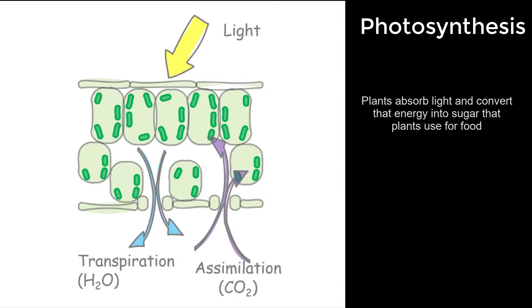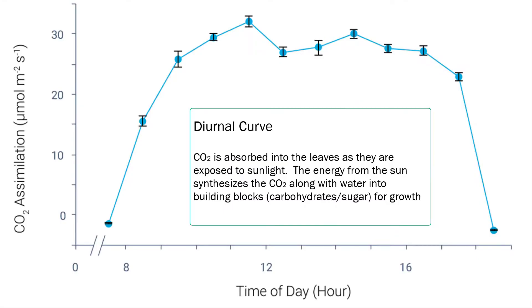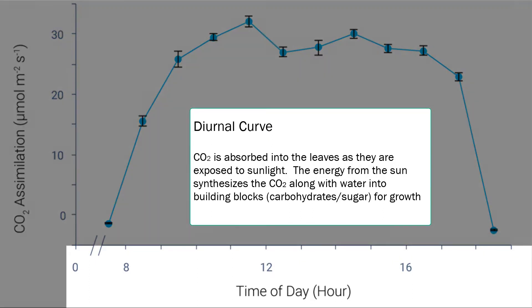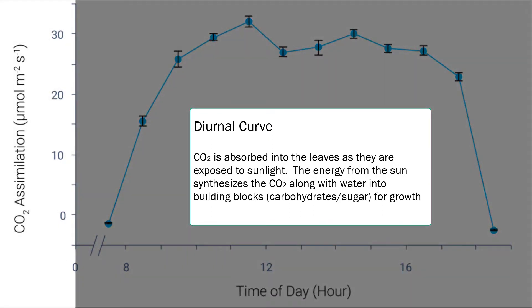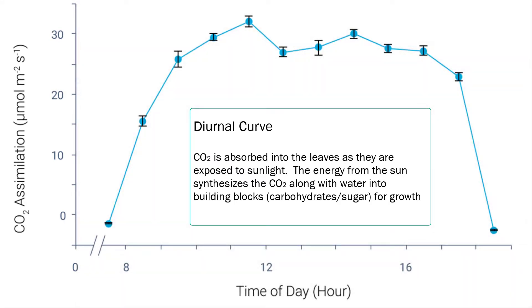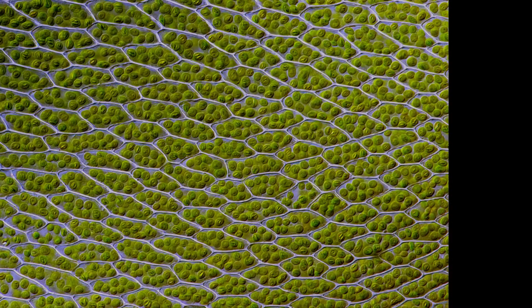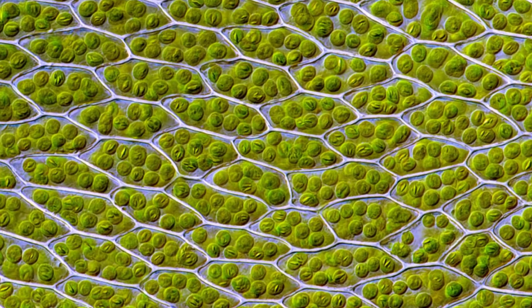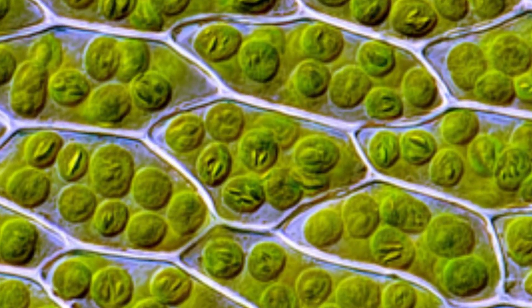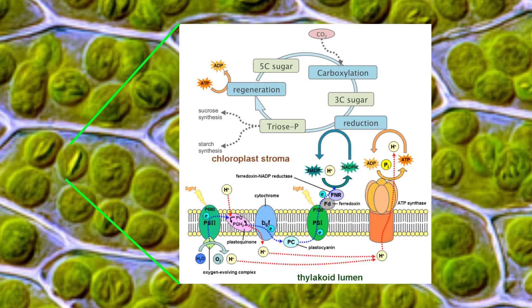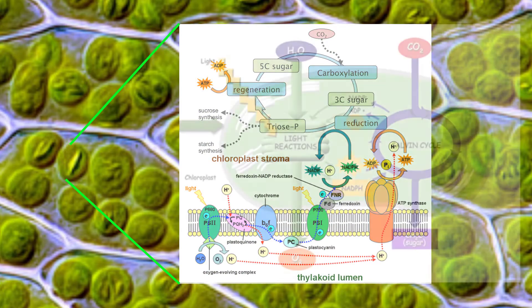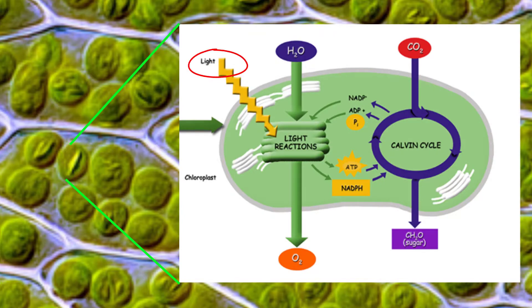Let's talk about how plants absorb light energy and convert it into sugar for food. We start with a diurnal curve made outside — across the x-axis we have time of day, and on the y-axis we have CO2 assimilation, also known as photosynthesis. The main purpose of this plot is to illustrate how energy from the sun is used to synthesize CO2 and water into the building blocks that plants use for growth. We can take a more detailed cellular-level look inside a leaf and see the chloroplasts, where a fairly complicated photochemical process occurs.